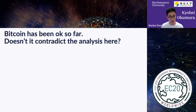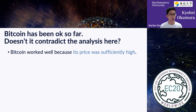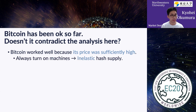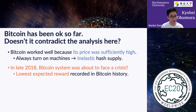Our theory says Bitcoin DAA is fragile and problematic. However, one may argue that Bitcoin has been okay so far, and that this historical fact proves our analysis is nonsense. We can respond as follows: Bitcoin worked well because its price was sufficiently high. Under such high prices, miners always turn on their machines and hash supply becomes inelastic. We show that in late 2018, the Bitcoin system was about to face a crisis — in that period, the lowest expected reward was recorded in Bitcoin history, and as a result, many miners turned off their machines.